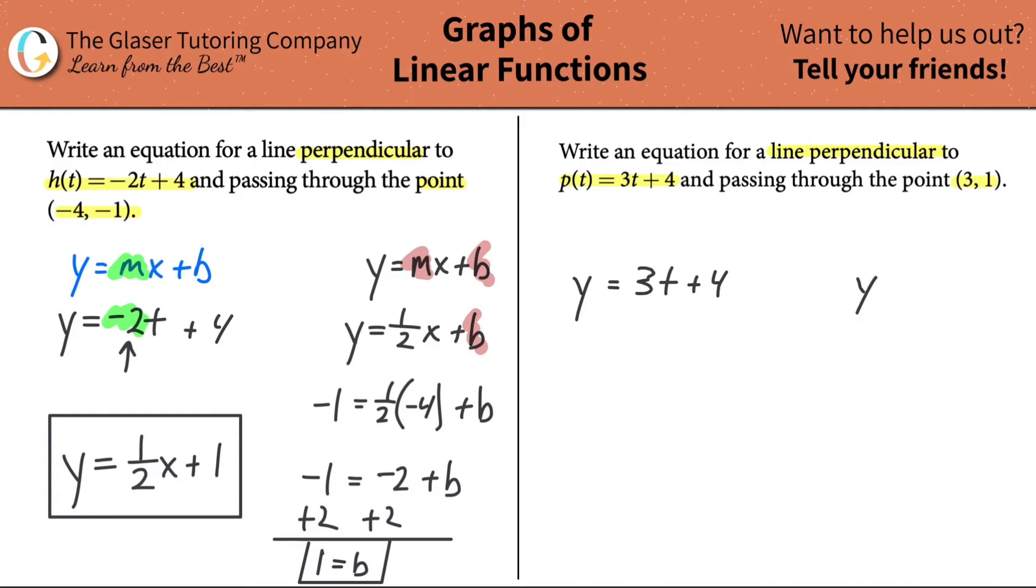Our new line has to be perpendicular. We know that the slope here, if it's 3, the slope of our new line must be an opposite reciprocal or negative reciprocal. If this is positive, this becomes negative. If this is 3, remember 3 is the same as 3/1, then this part will become 1/3. It's literally that simple.